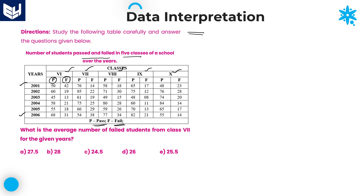Once again I am repeating: total all 5 classes, class 6 to class 10, and the number of years — 6 years, 2001 to 2006. In each and every class, number of passed students and number of failed students over all the years 2001 to 2006. That is the given information. Based on that, we need to solve the questions.